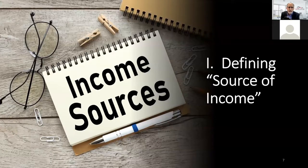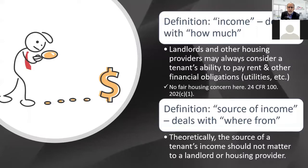A basic question is the definition of source of income, and it should be distinguished from regular income. Income means how much — it deals with how much income someone has, and landlords and housing providers are always free to consider tenants' ability to pay rent or other financial obligations such as utilities and water bills, and there's no fair housing issue there.